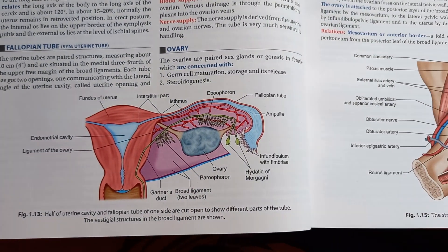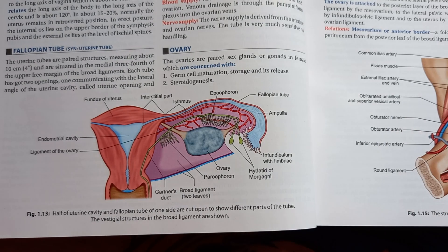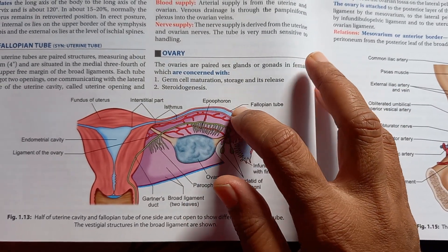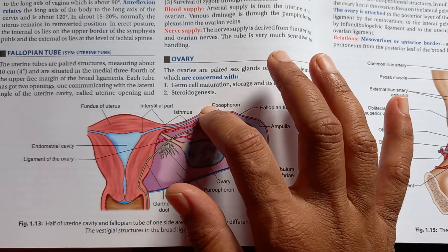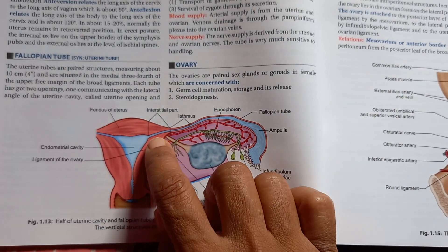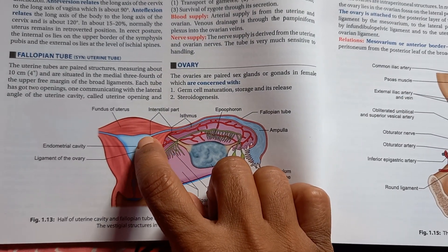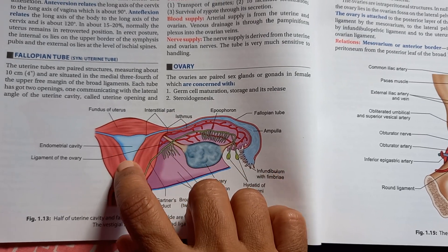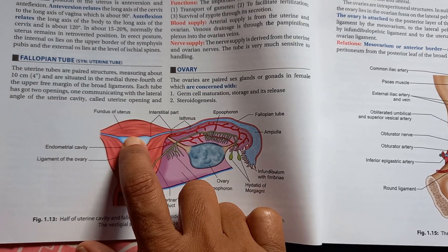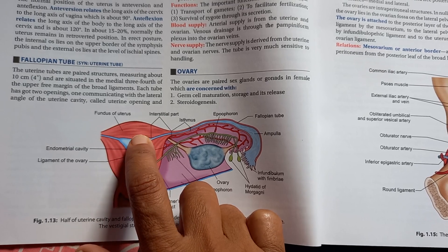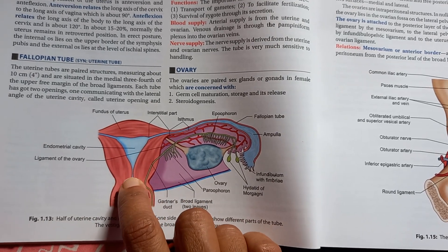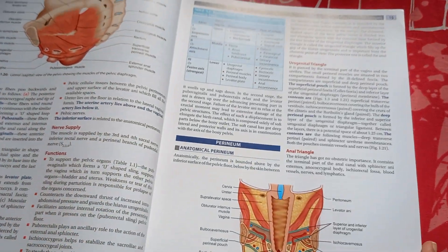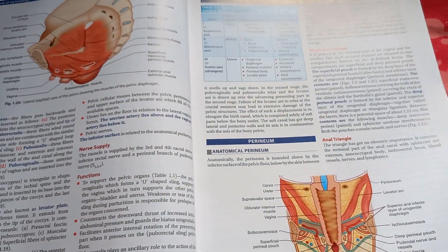Here they have tried to show you the anatomy. You have the ovary, the fimbriae, the ampulla, the fallopian tubes and its parts — the isthmus, the interstitial part — which is the small part between the uterus and the fallopian tube. Then here you have the uterus, the endometrial cavity, the cervix, and the vagina.